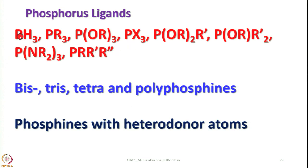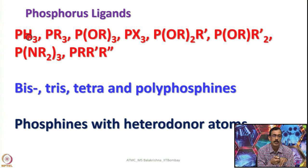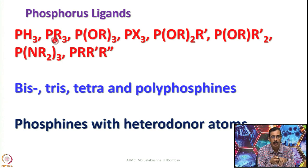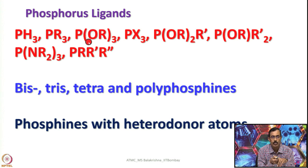Let us try to understand more chemistry of phosphines as ligands. The simplest phosphorus donor ligand is phosphine, very similar to ammonia. Substituting hydrogens with R groups gives primary, secondary, and tertiary phosphines. Tertiary phosphines are PR3; one can also have alkoxy or aryloxy groups on phosphorus — when all three groups are alkoxy or aryloxy they are called phosphites, e.g., trimethylphosphite or trimethoxyphosphine. PF3, PCl3, and PBr3 can also be used as ligands.